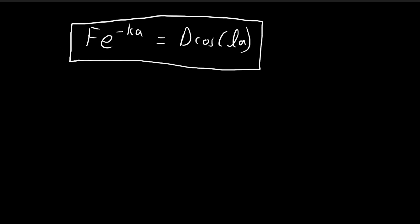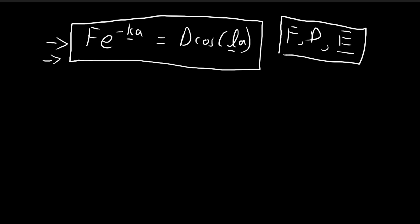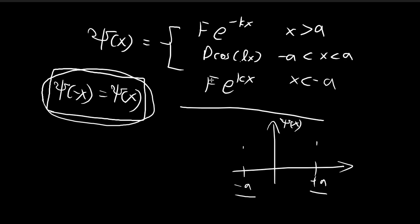Using the continuity requirement, we've obtained one relationship between the constants. We have three unknowns: f, D, and the energy level E. Finding E will also give us l and k, since l and k are defined in terms of E. With three unknowns, we need three relationships. The second requirement is that dψ/dx must also be continuous at x = ±a.